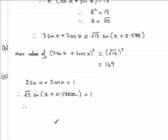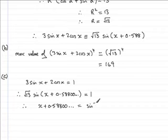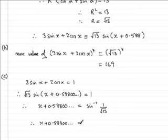The next step is to divide both sides by √13 and take the inverse sine of both sides. That's going to leave me with x + 0.58800... = sin^(-1)(1/√13). Make sure your calculator is in radians mode. If we press the inverse sine of 1 over √13, you should find that you get 0.28103 and so on.